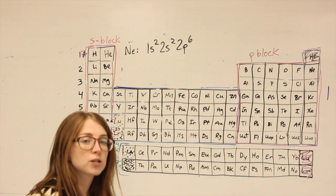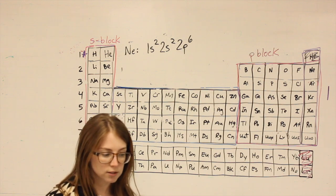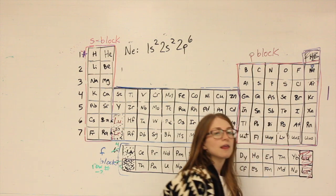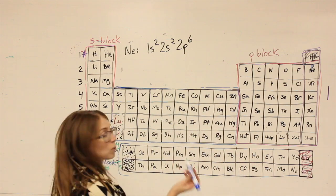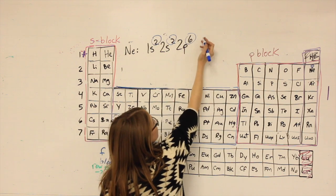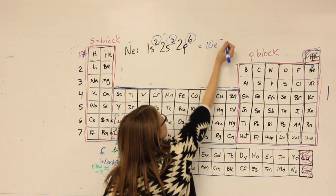The small numbers on top are telling us the total number of electrons. So neon atomic number is 10. That means it normally has 10 electrons and where those 10 electrons are: 2 plus 2 is 4 plus another 6, 10 electrons.